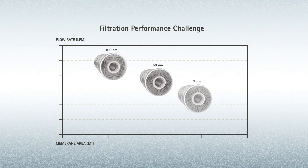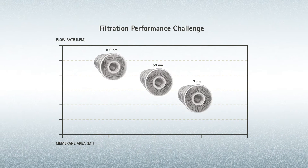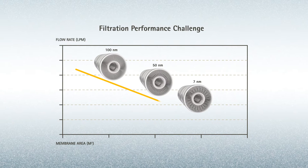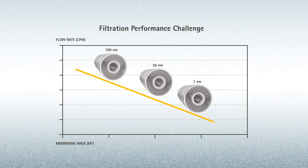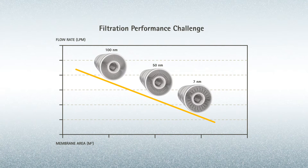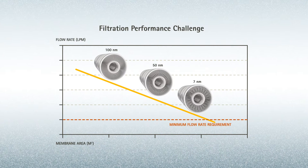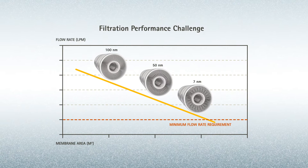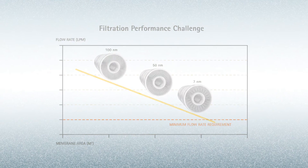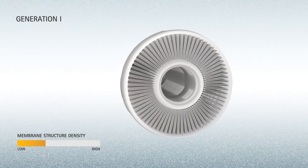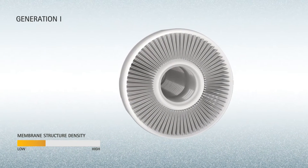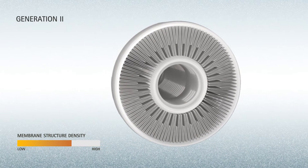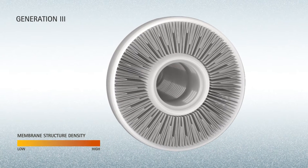However, halving the pore size in a membrane requires the membrane area of a filter to increase exponentially to maintain an equivalent flow rate. After multiple filter generations have utilized this method, the physical limits inside of radial filters have been reached.